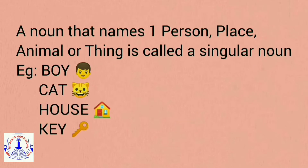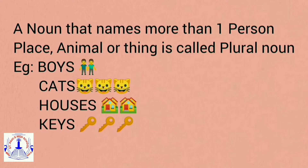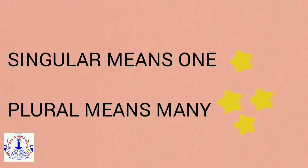A noun that names one person, place, animal, or thing is called a singular noun. A noun that names more than one person, place, animal, or thing is called a plural noun. Examples of plural nouns: boys, cats, houses, keys. Singular means one and plural means many.